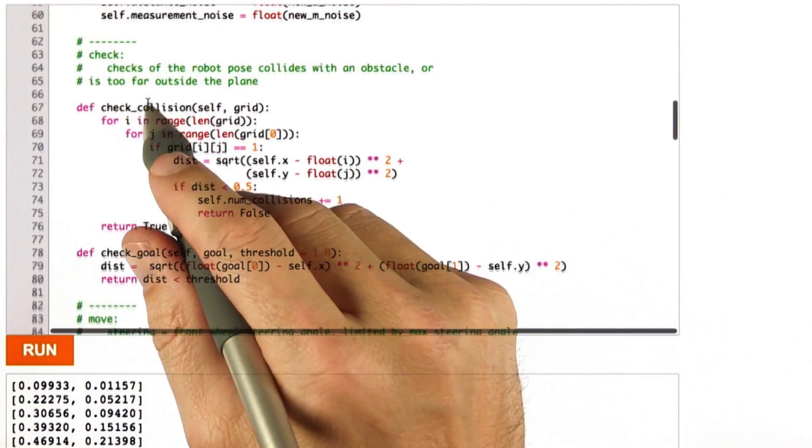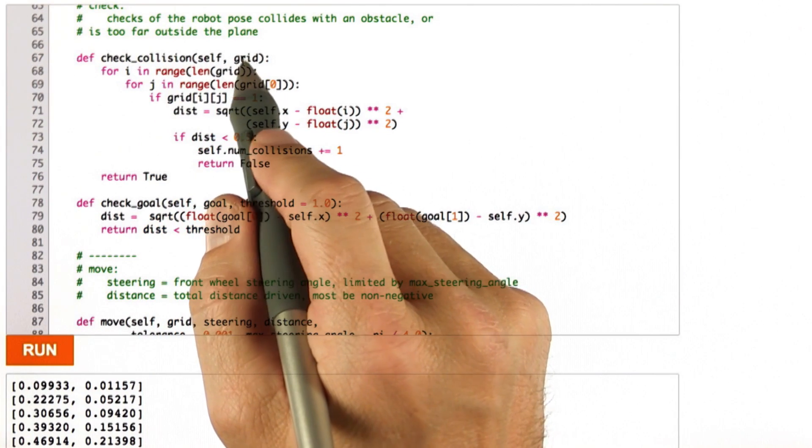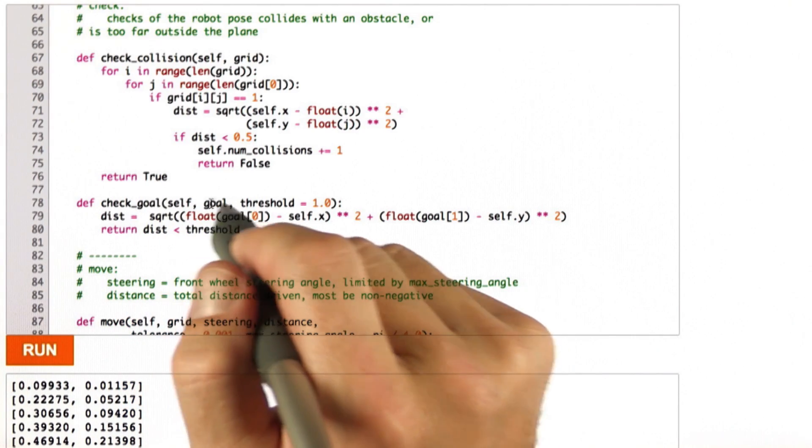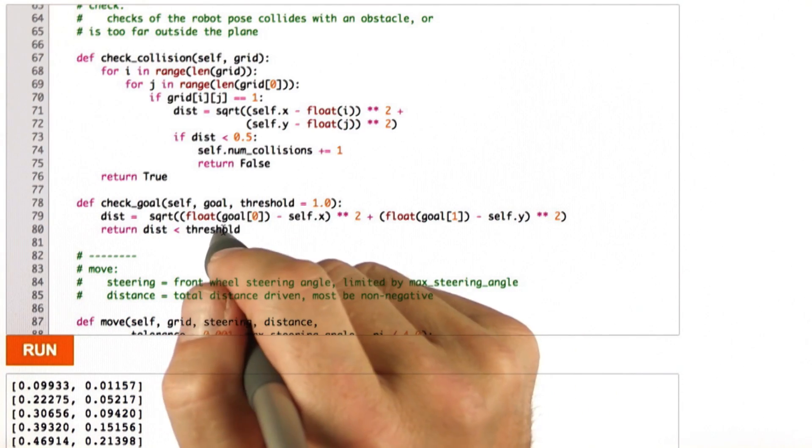And then we have two checking functions, whether we have a collision with a world called grid, which I'll show you in a minute, and we have a checkGoal function to see if we reached a goal according to a certain distance threshold.